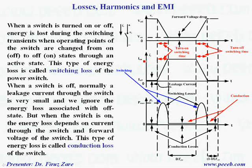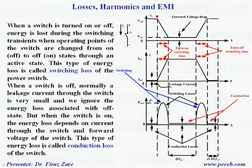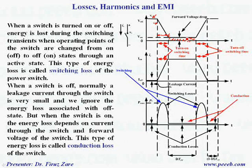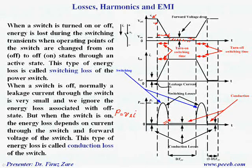When a switch is turned on or off, energy is lost during the switching transients when the operating point of the switch changes from on to off state through the active state. Suppose the switch is off and we apply a gate signal — the switch turns on over this switching time. Because power equals voltage times current, this is the switching loss when the switch is getting on.